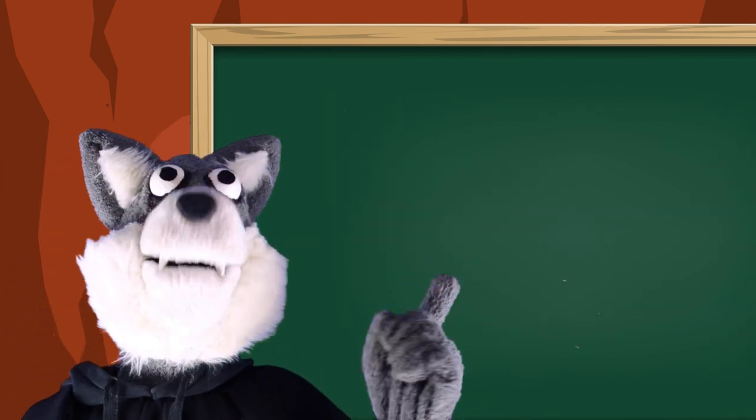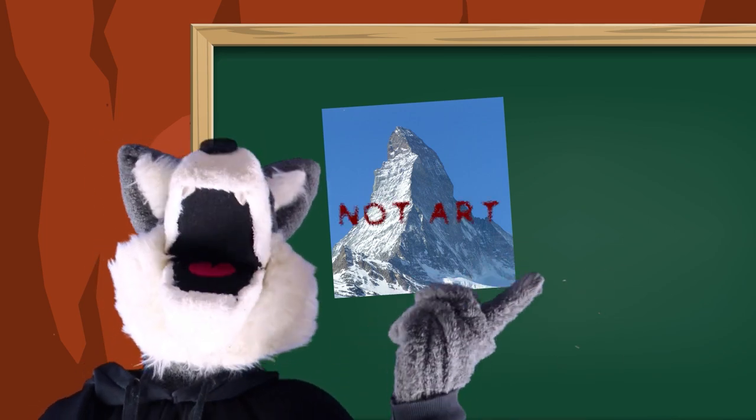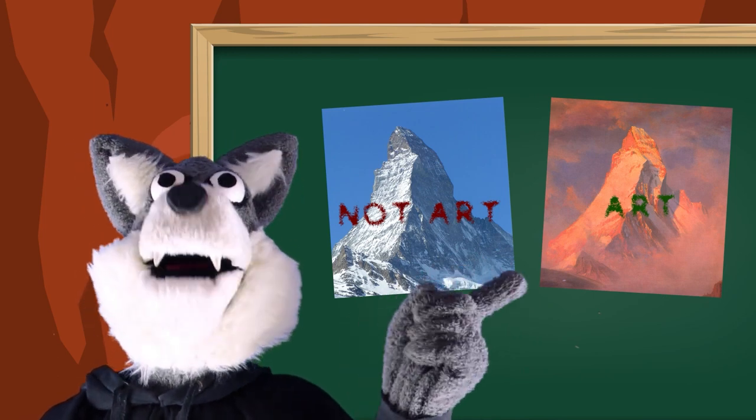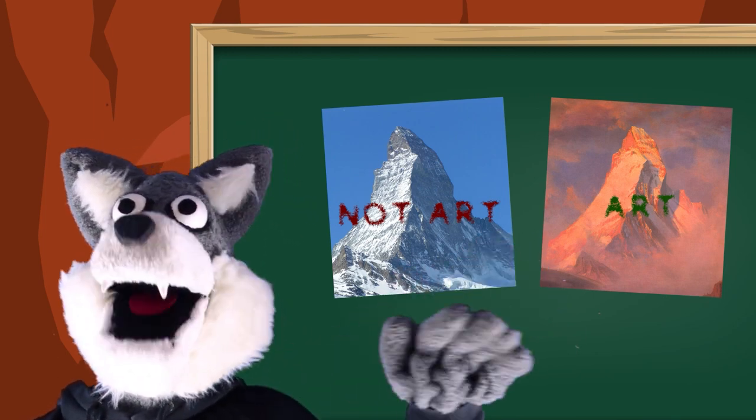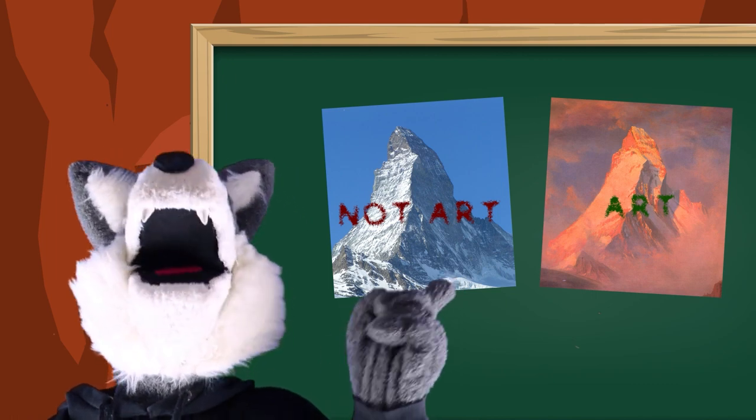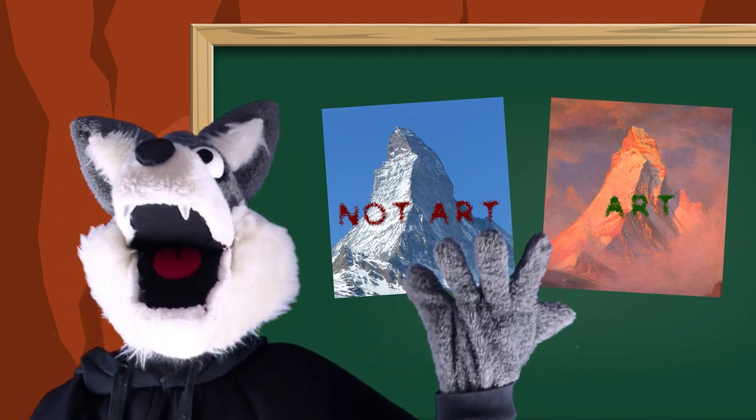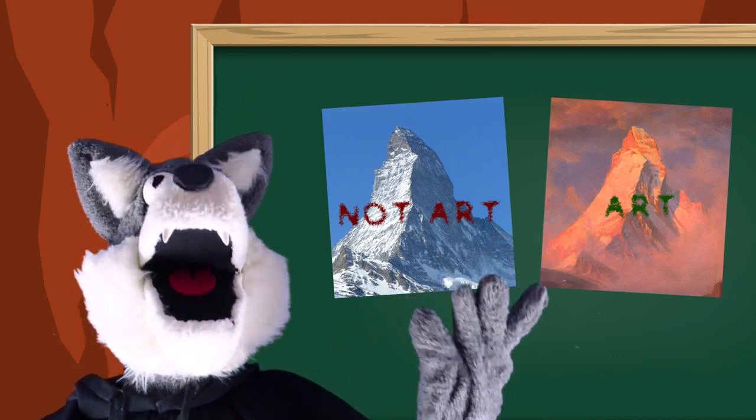So for instance, beautiful mountain isn't art, but painting of beautiful mountain is. Even though the mountain is beautiful, that's not the reason why it was made. And it was made by shifting of tectonic plates, not by a human. Painting of beautiful mountain, however, was made by a human for the purpose of expressing its beauty.